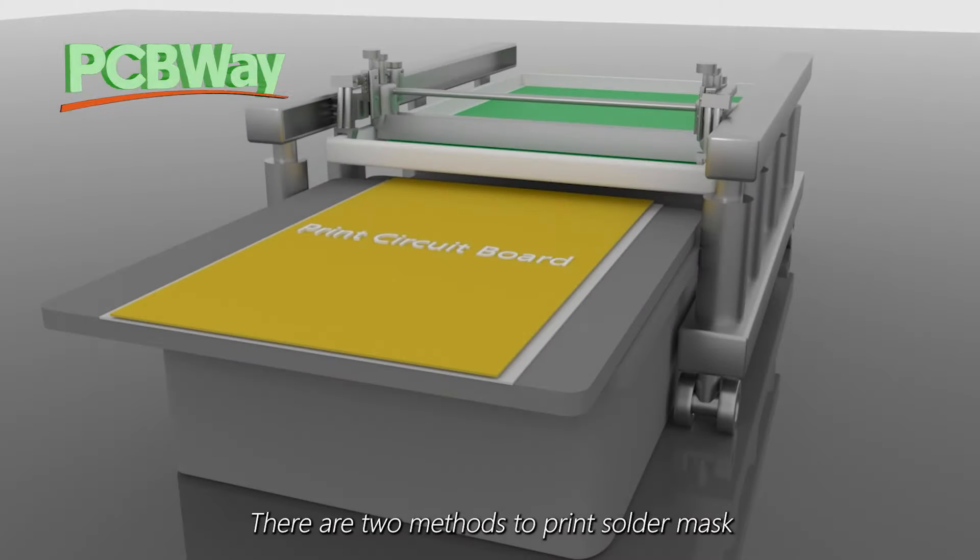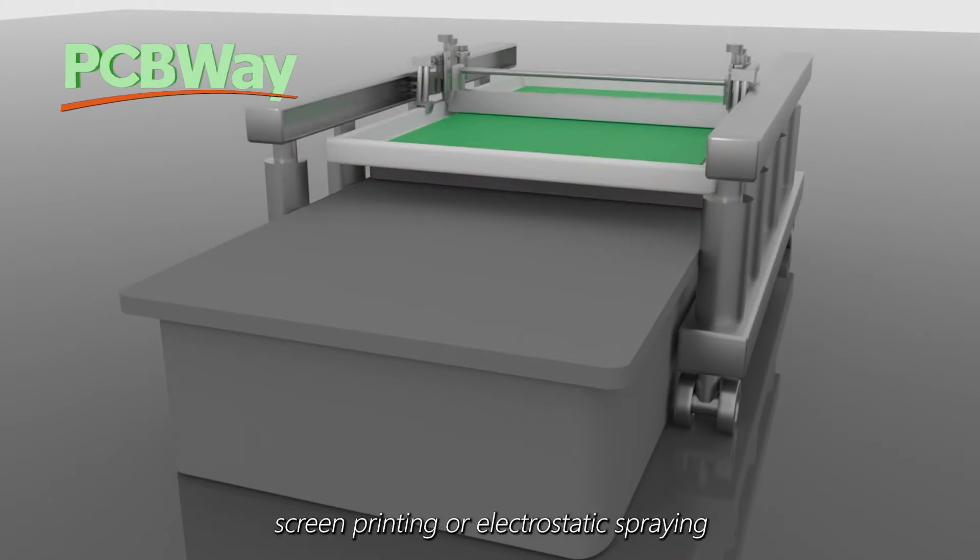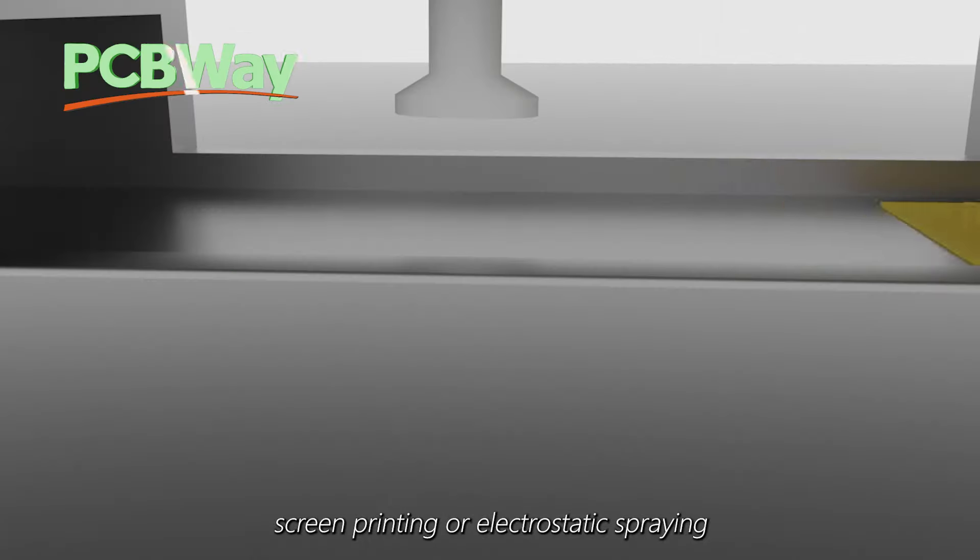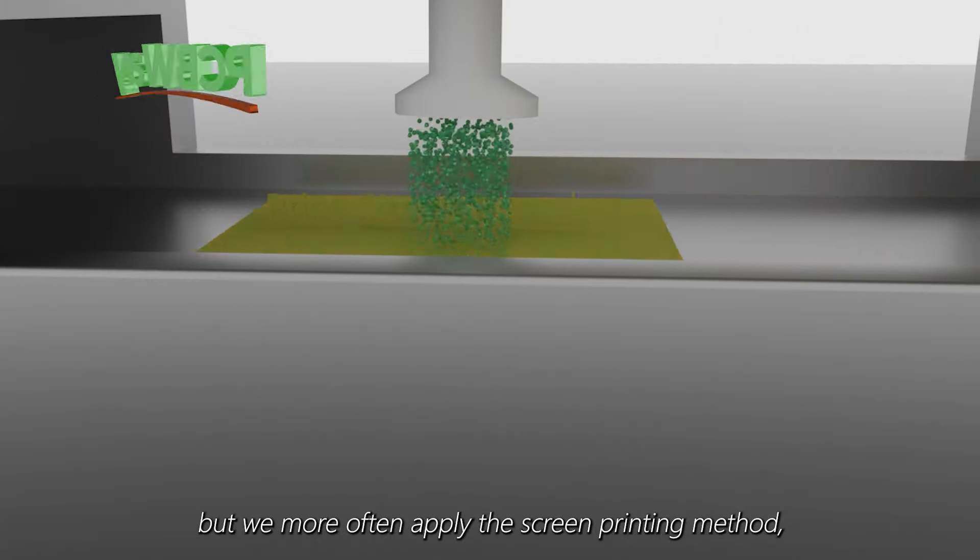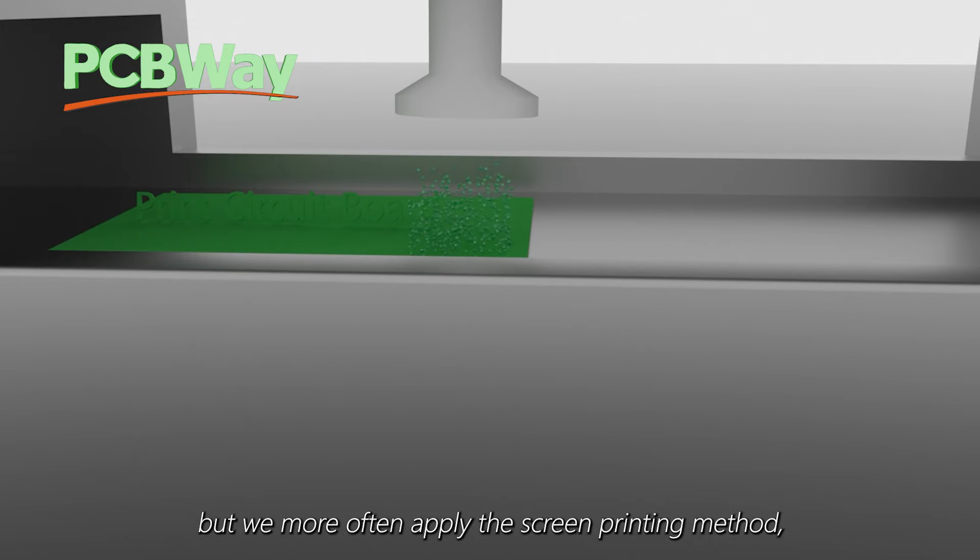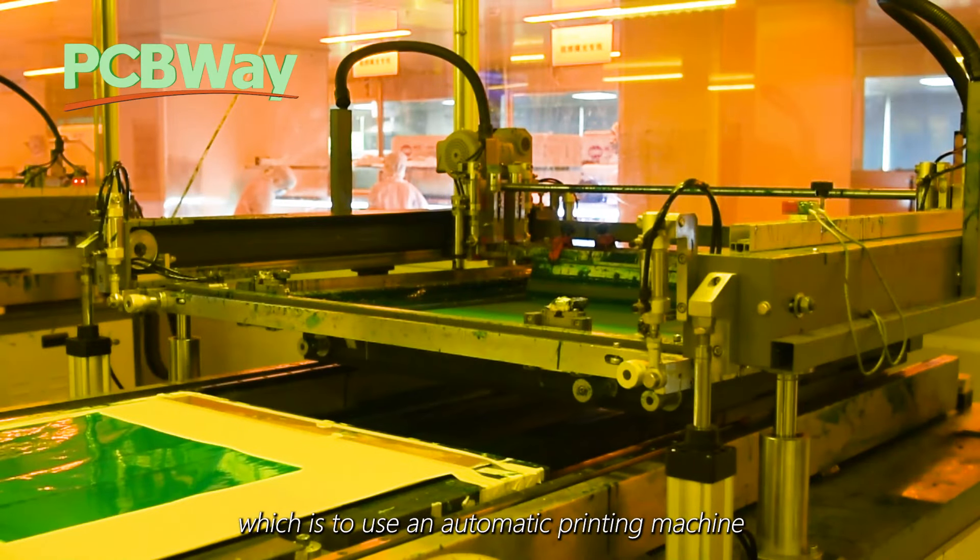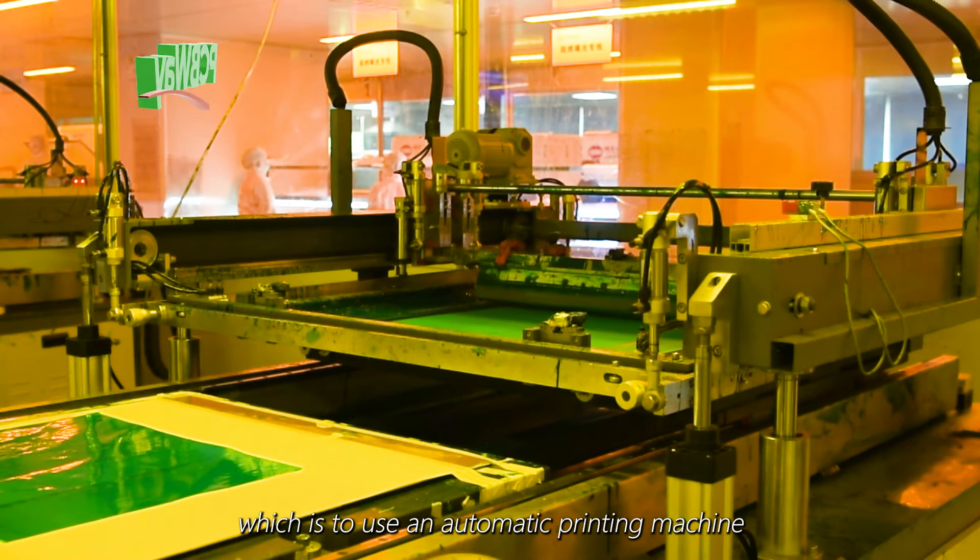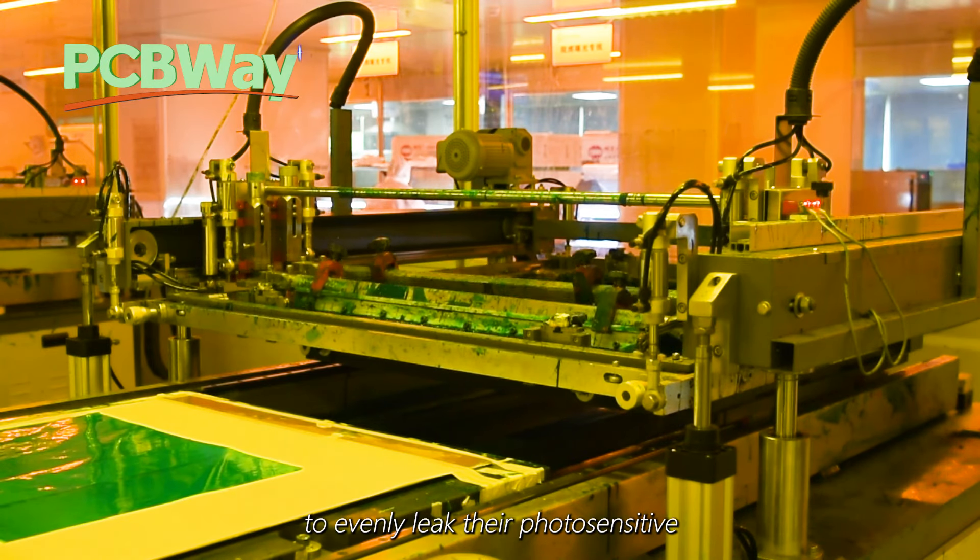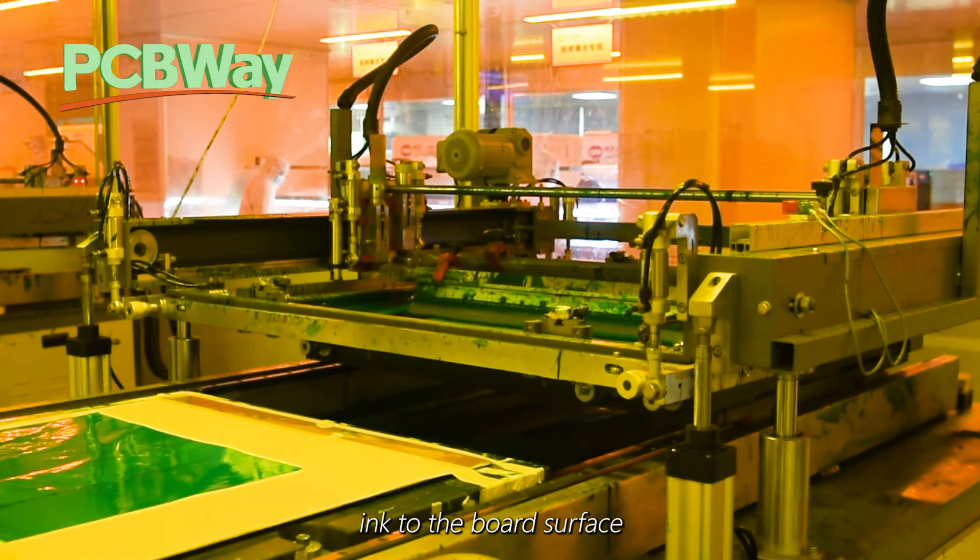There are two methods to print solder mask: screen printing or electrostatic spraying, but we more often apply the screen printing method, which is to use an automatic printing machine to evenly link the photosensitive ink to the board surface.